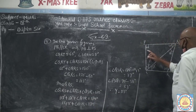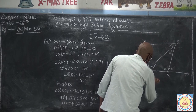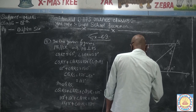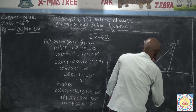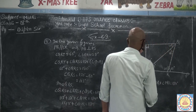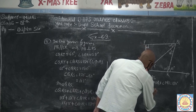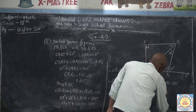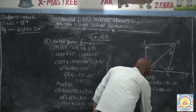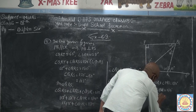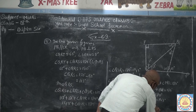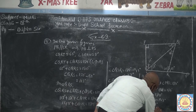Again, in triangle PQS: angle QPS plus angle PSQ plus angle PQS equals 180. Angle QPS is 90 degrees and angle PSQ is 53 degrees, so 90 plus 53 plus angle PQS equals 180. That gives 143 plus X equals 180, so X equals 180 minus 143, which is 37 degrees. And Y equals 53 degrees. That is your answer.